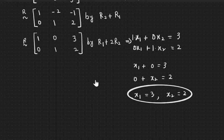This is how we apply a sequence of elementary row operations on the augmented matrix to reduce it to a form where the coefficient of the first variable in the first equation is 1 and all other coefficients are 0, and the coefficient of the second variable in the second equation is 1 and all other coefficients are 0. If we have three equations, the same applies to the third variable. Then the solution is read directly from the equivalent system.